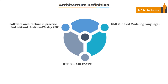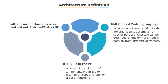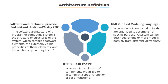There are different definitions of architecture defined by different organizations. In UML, the Unified Modeling Language, it's the collection of connected units which are organized to accomplish a specific purpose, and what you need is some kind of model which defines how these things interconnect. The IEEE says a system is a collection of components which need to be organized to perform a particular function or set of functions. And software architecture in practice says the software architecture of a program is the structure of the program which enables the elements to be connected together and the relationships between them.